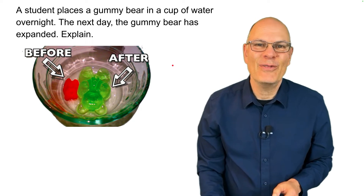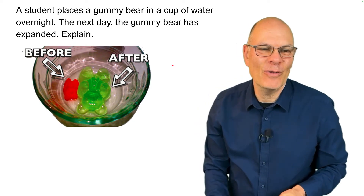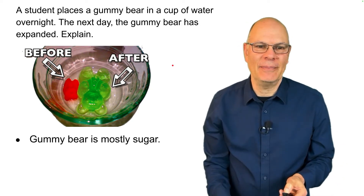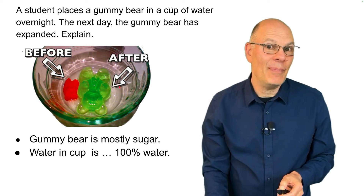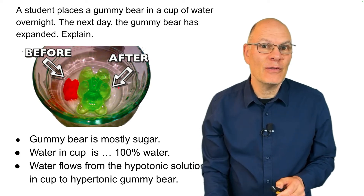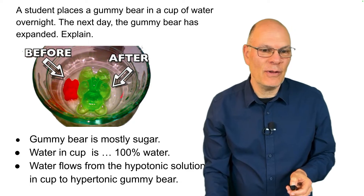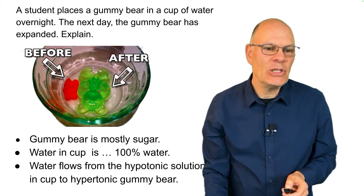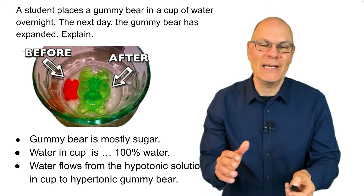Here's a fun example. A student places a gummy bear in a cup of water overnight; the next day the gummy bear has expanded. The gummy bear is mostly sugar, while the water in the cup is nearly 100% water. Water always flows from hypotonic to hypertonic, so water flows from the hypotonic solution in the cup into the gummy bear. The gummy bear expands because of osmotic pressure.